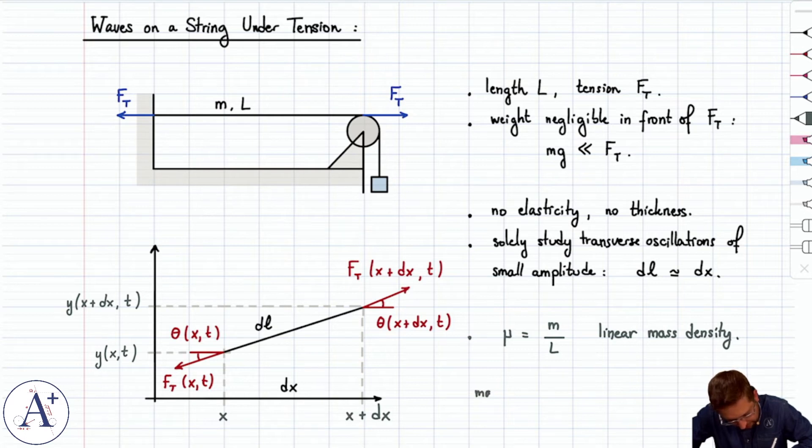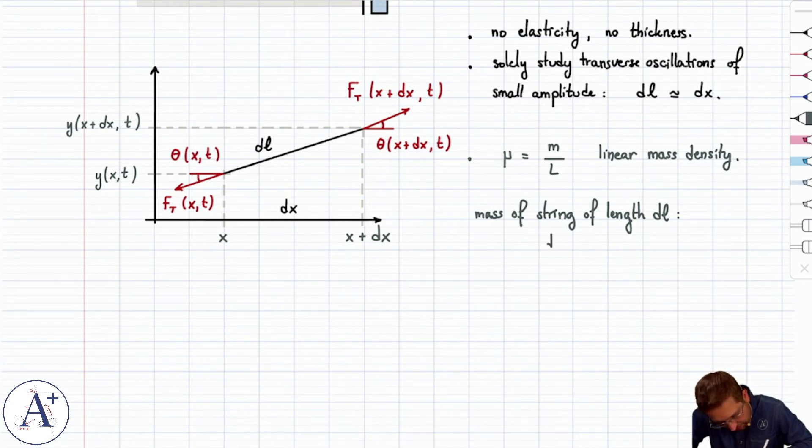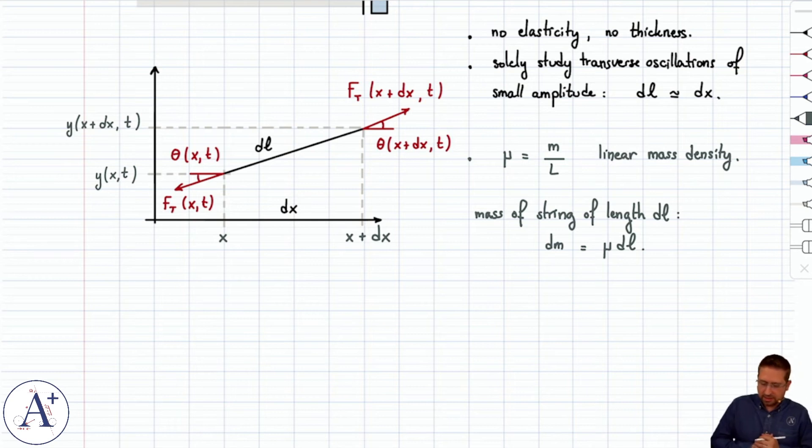That means that the mass of the string of length dL, or the piece of string really, is then going to be dm, that's the infinitesimal mass, is going to be μ, that's mass per length times the length. So μ dL, and dL is approximately dx anyway. So that's the mass of this piece of string here, which we're going to need to write Newton's second law.